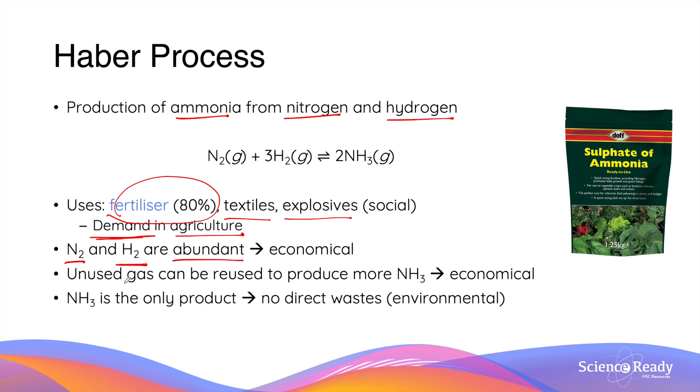In the production of ammonia, any unused gas of nitrogen or hydrogen can be recycled and reused to produce even greater amounts of ammonia. This again increases the economical aspect of the process. Since the Haber process only produces ammonia from the two gases, the final product is usually of high purity and there's no production of any direct waste. So we are minimizing the environmental consequences the chemical process can have.